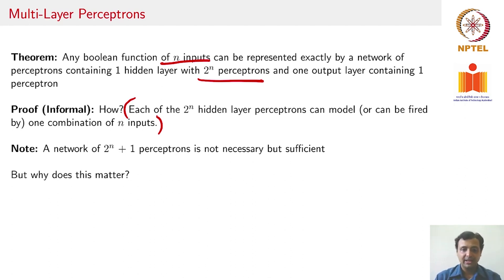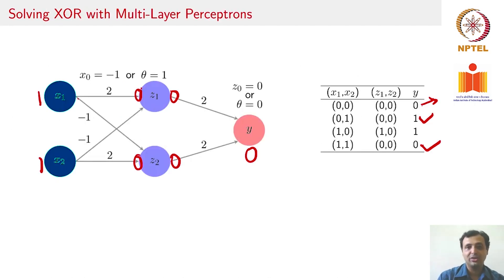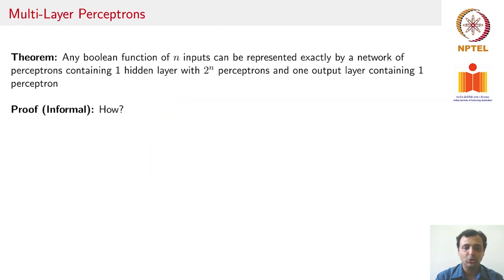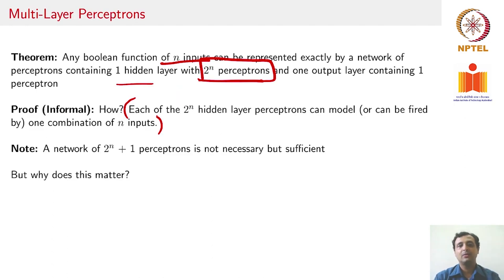But one thing to keep in mind: this is sufficient but not necessary, which means you could solve a problem with less than 2^n neurons too. For example, we just solved the XOR problem with a hidden layer with just 2 neurons. We should have needed 2^2 or 4 neurons, but that is not the case. A network of 2^n+1 perceptrons is not necessary, but it is sufficient.